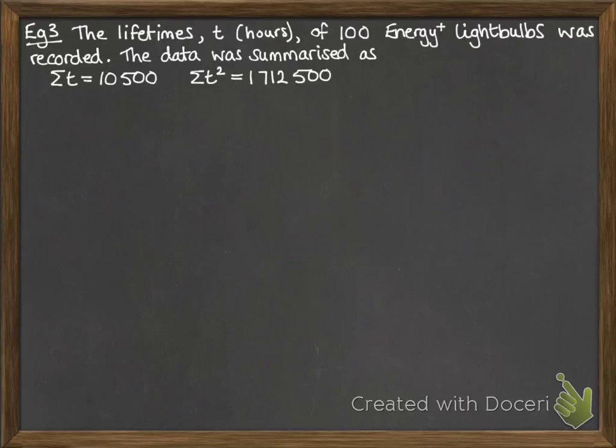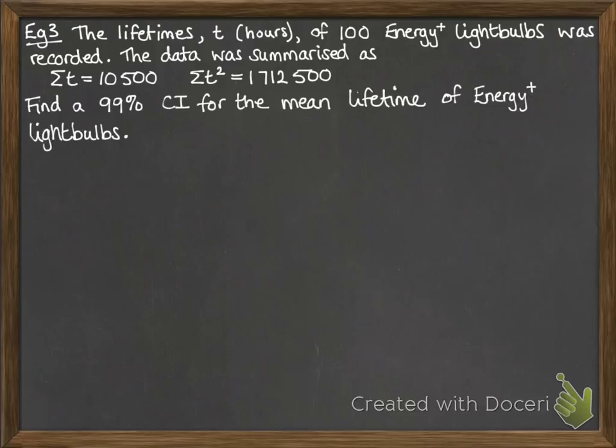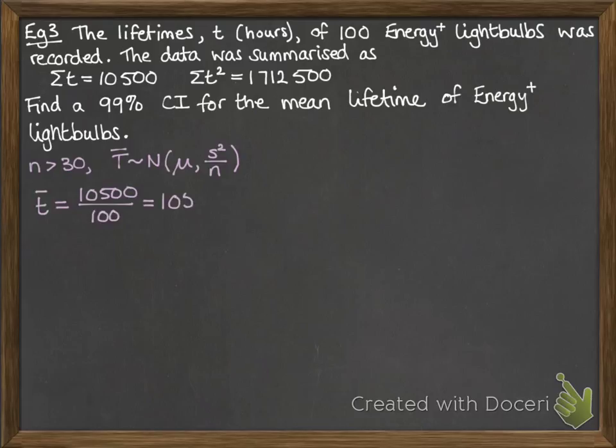Last example. The lifetimes t of 100 energy plus lightbulbs was recorded and the data summarized. We want to find a 99% confidence interval for the mean lifetime. Since n is bigger than 30, we can use the central limit theorem. We don't actually know what the distribution for t is. It might be normal, it might not. But since the sample is large enough, we can assume by the central limit theorem that the mean is normally distributed. The sample mean is 105.